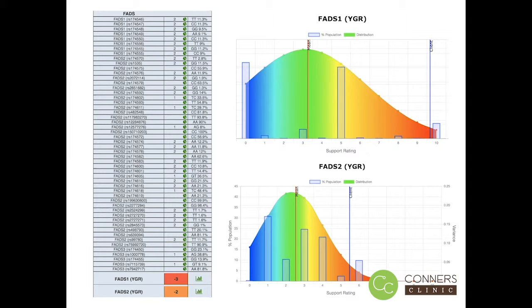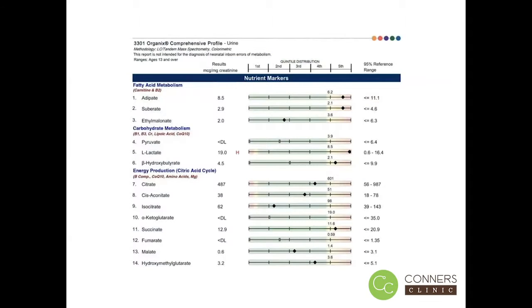When we look at the graphs on the right side, we can see where that person is falling in relation to the people within our database. We look at genes and then the average of where those people are falling. Anytime a person is falling to the right side of the mean,